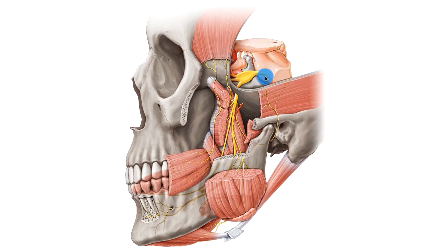A bit of the brainstem is visible, and you can see here another structure known as the trigeminal nerve, which then branches into the focus of this tutorial, which is the mandibular nerve.